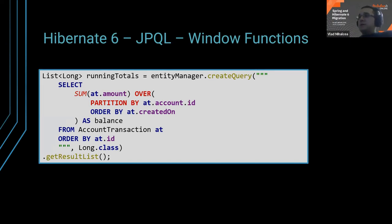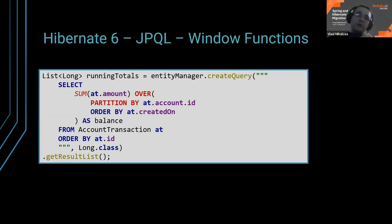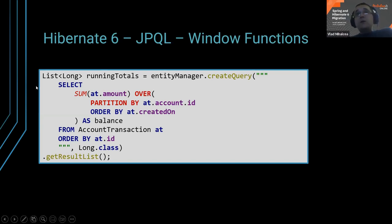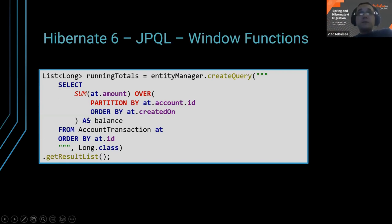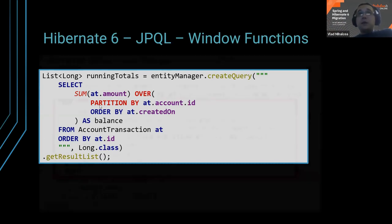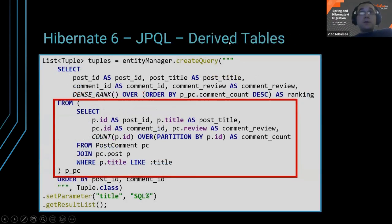You have a lot of window functions: dense rank, percentiles, lag, lead, and many more. You can define partitions dynamically. Now you can benefit from these window functions not only in native SQL queries, but also in JPQL and Criteria API queries. You also now have derived tables.